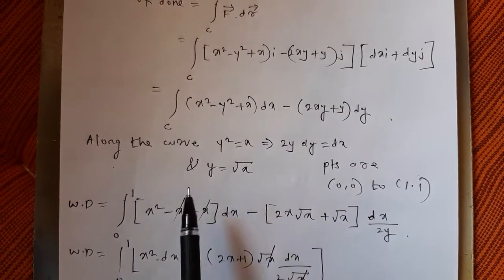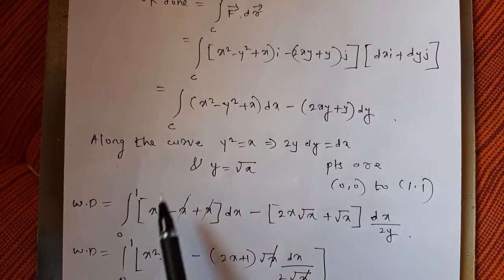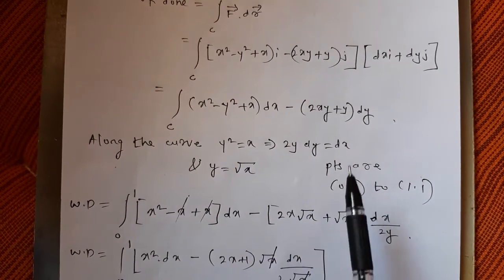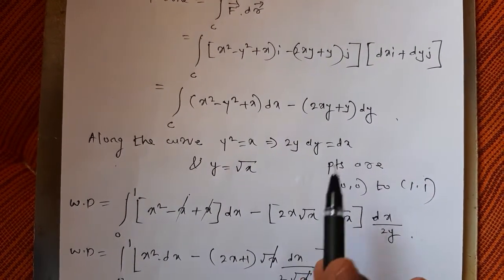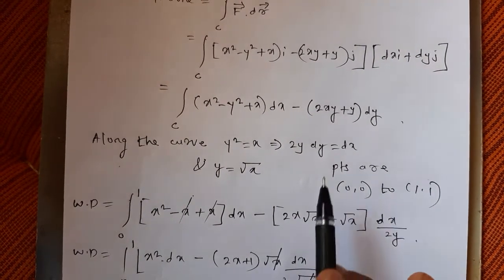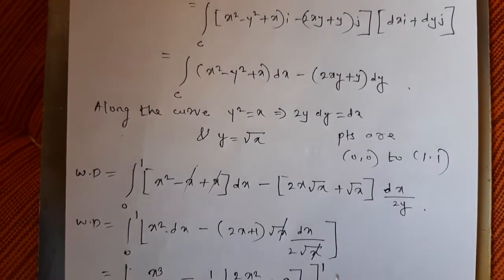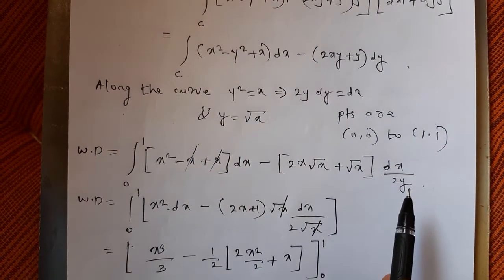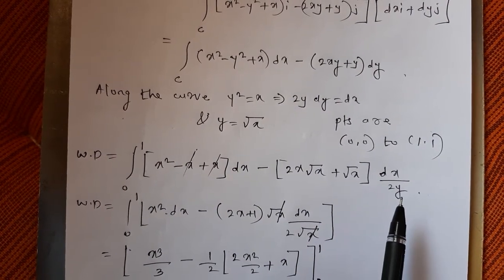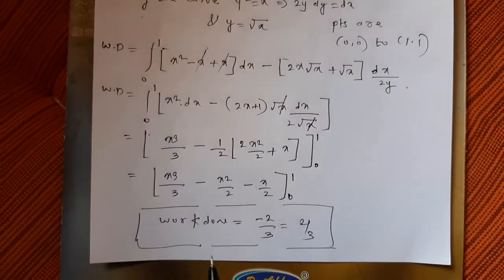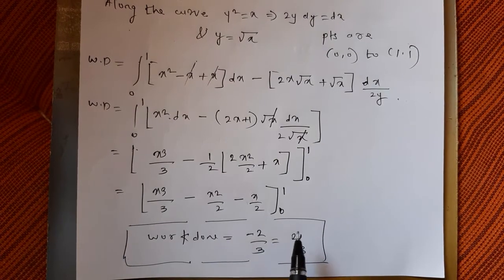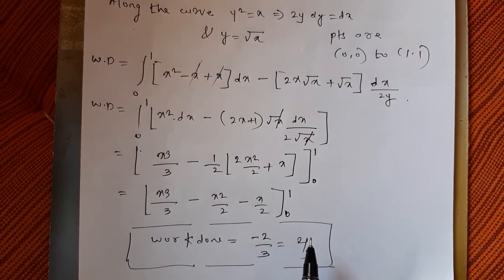Substituting under the integral from 0 to 1: (x² - x + x) dx minus (2x·√x + √x) times dx/(2y), where y = √x. After full substitution and simplification, I get the work done as -2/3. Since work is always taken as positive, the required answer is 2/3.